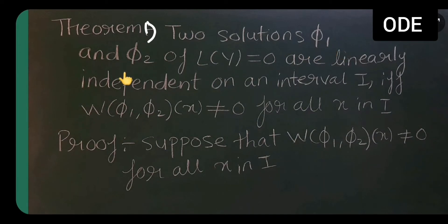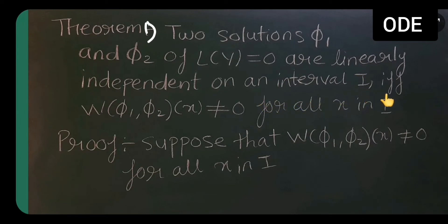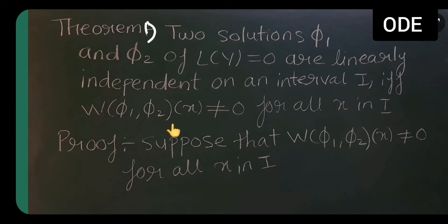Two solutions phi 1 and phi 2 of L(y) = 0 are linearly independent on interval I if and only if the Wronskian W(phi 1, phi 2)(x) is not equal to 0 for all x in I.